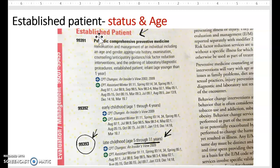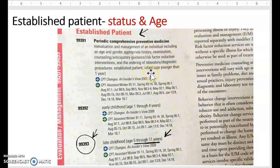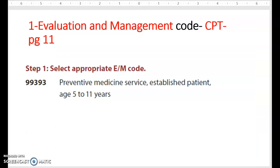We are concentrating on two key words: status and age. Status: established — found. Age: 99391 is for the infant, 99392 is for ages 1 through 4, and our patient is 5 years old, so the next code, 99393, says ages 5 through 11. Perfect — this is the code we are looking for, and we confirm our selection.